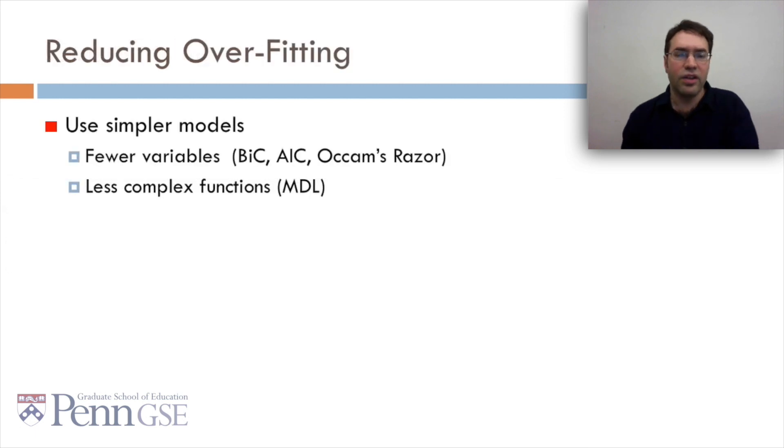To reduce overfitting, there's a few things you can do. You can use simpler models, for example, ones with fewer variables. BIC and AIC get to this, as we talked about last week. This is kind of the idea of parsimony or Occam's razor. You can also use simpler models in terms of using less complex functions, which corresponds to minimum description length, which is something I'm not talking about in the rest of the class, but it's worth taking a look at. These are the two big ways to get towards reducing overfitting.